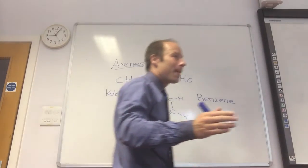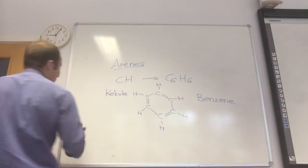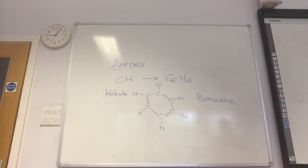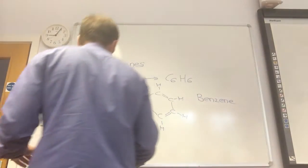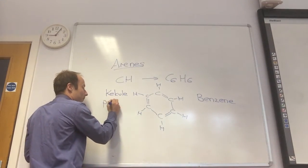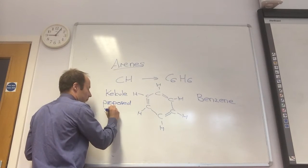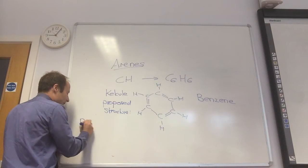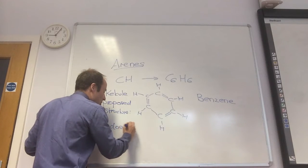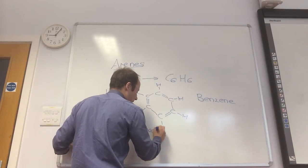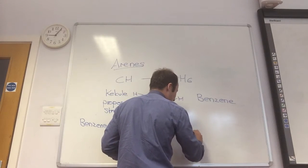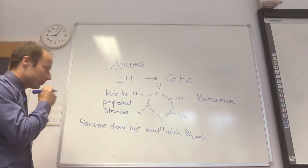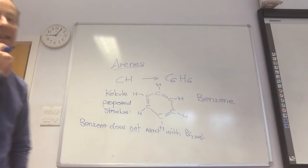So it should decolorize bromine. So the first thing chemists did is they put a load of bromine water into benzene, and it should decolorize. Well, it didn't work. So one of the problems, and this was his proposed structure, but one of the problems is benzene does not react with Br2 aqueous, which it should if it's got double bonds.